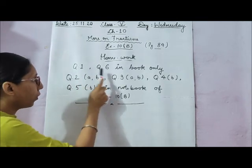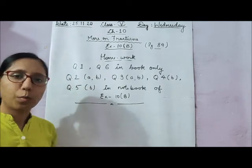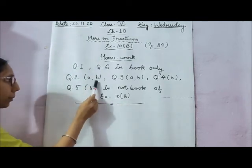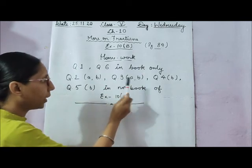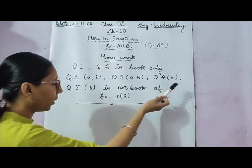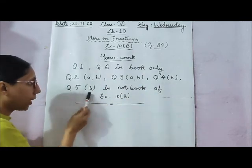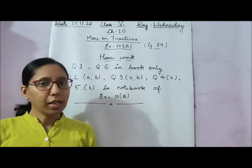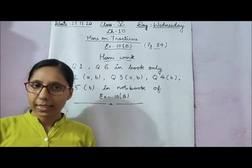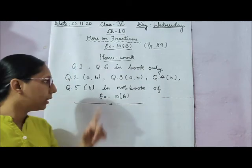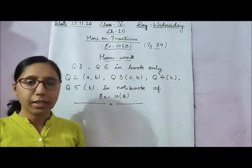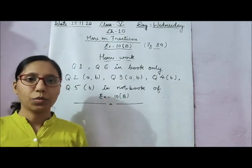For homework, you have to do question number 1 and 6 in your book only. In your notebook, do question number 2 AB parts, 3 AB parts, 4 B parts, and 5 B parts. You do not have to do question number 7. Thank you.